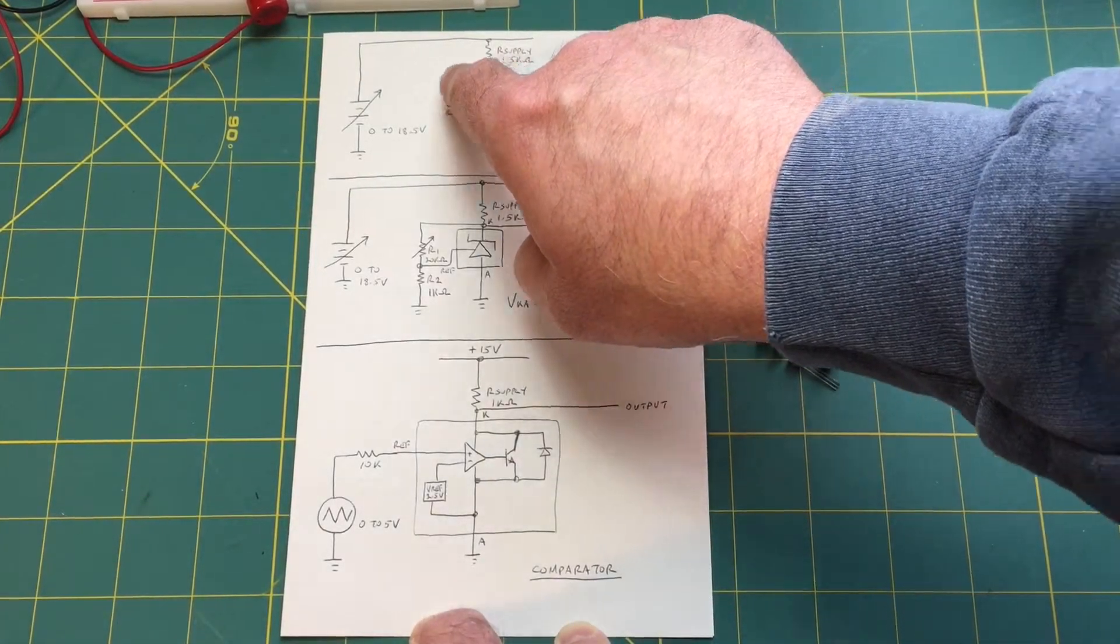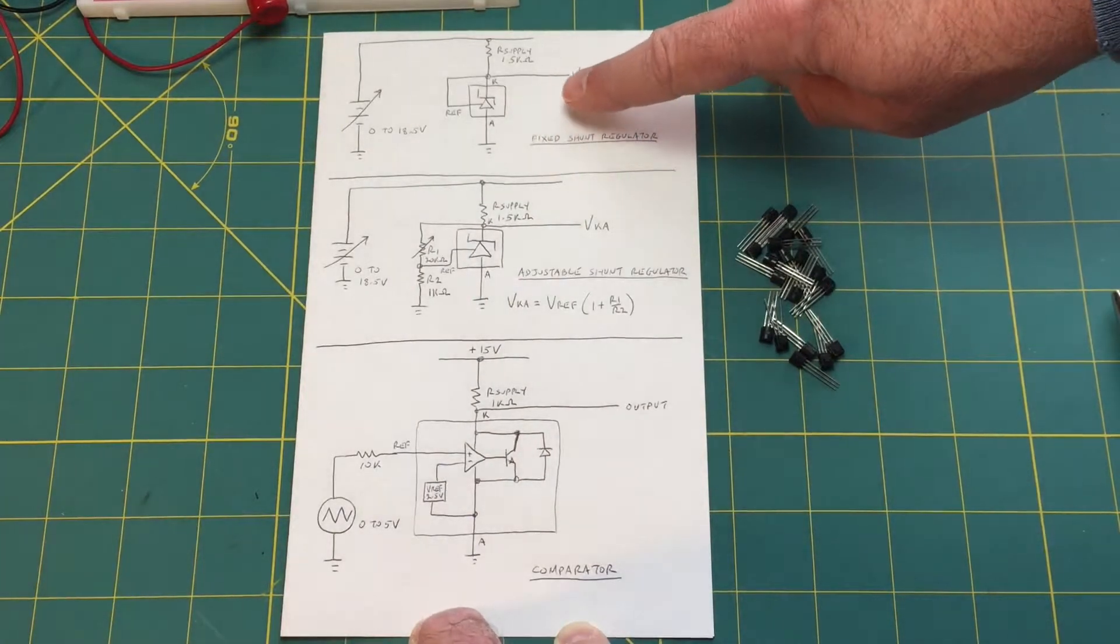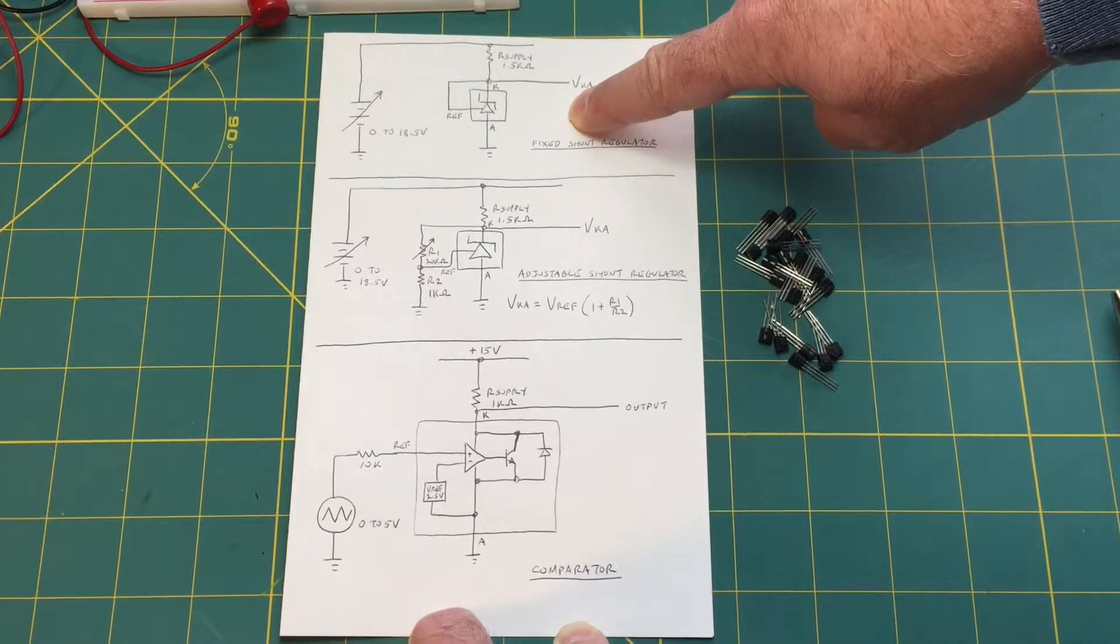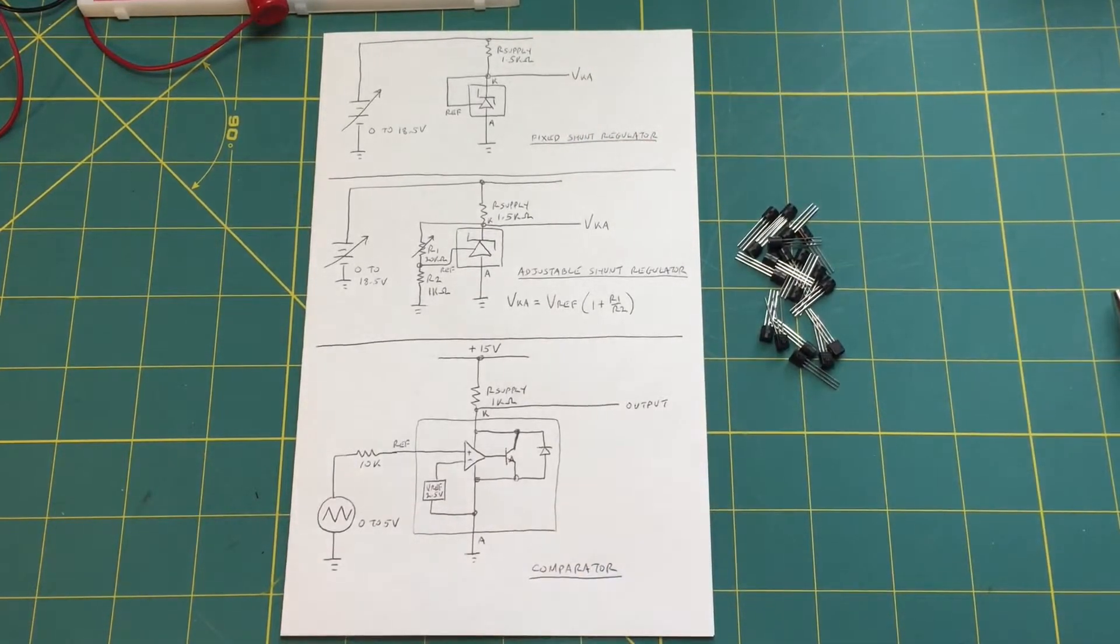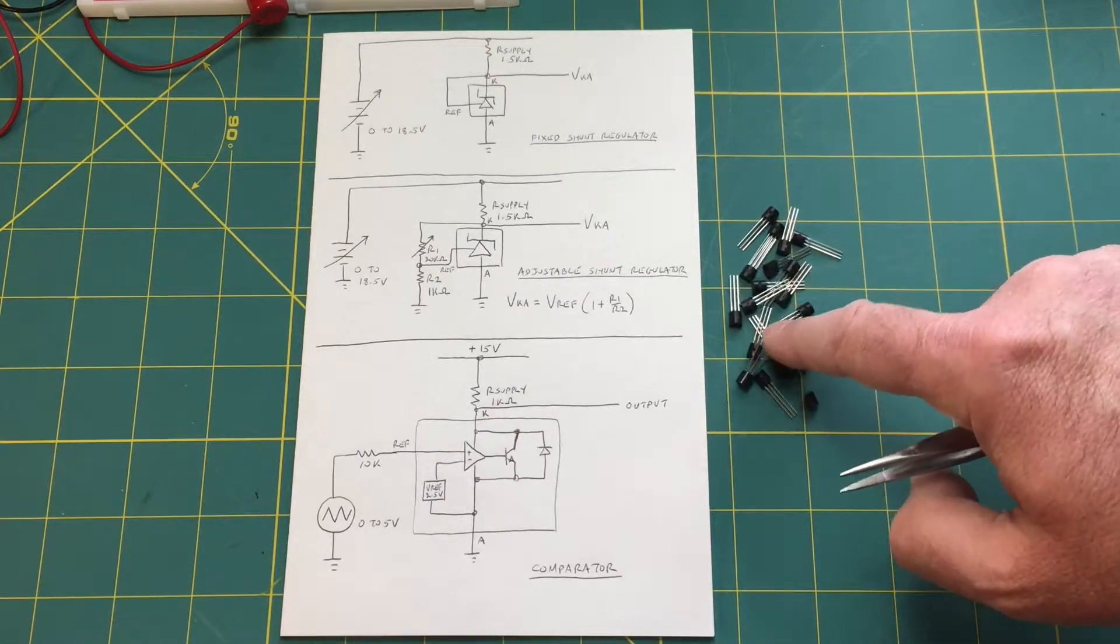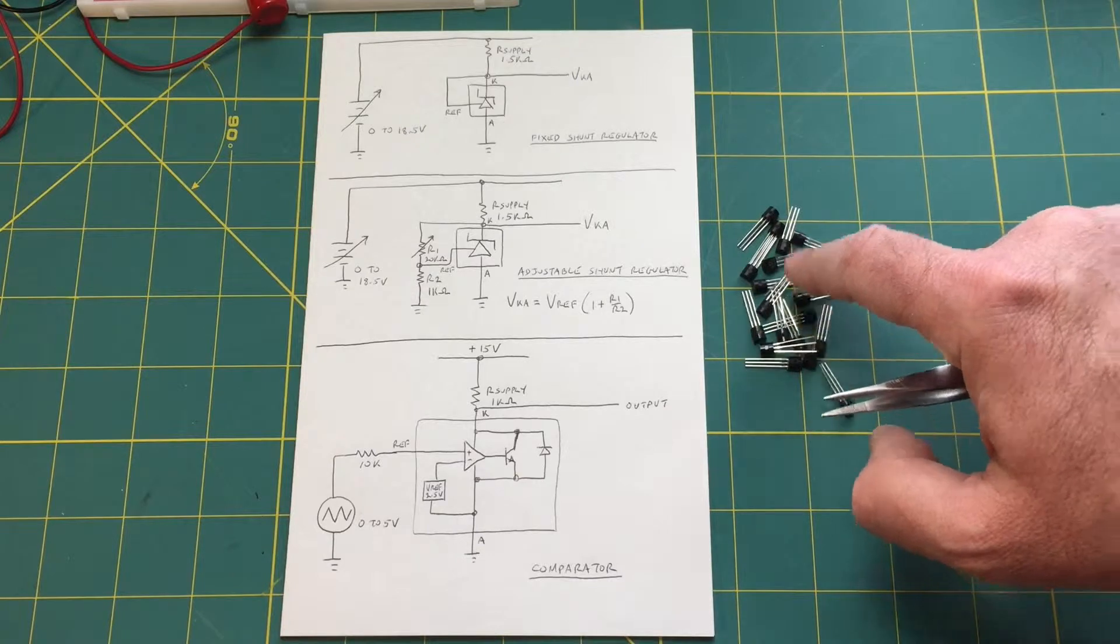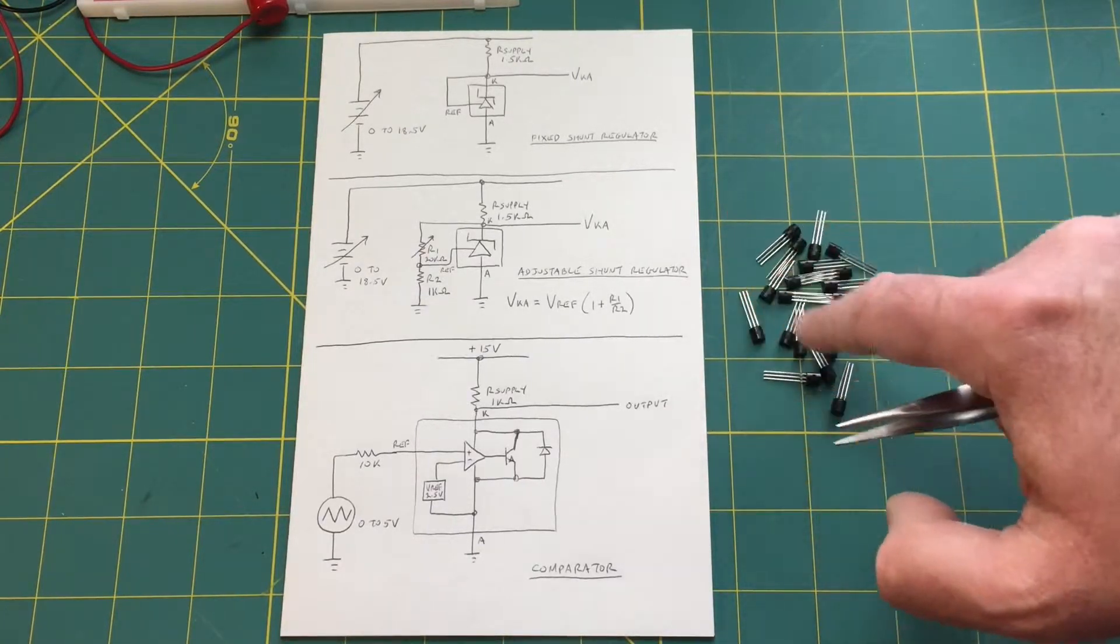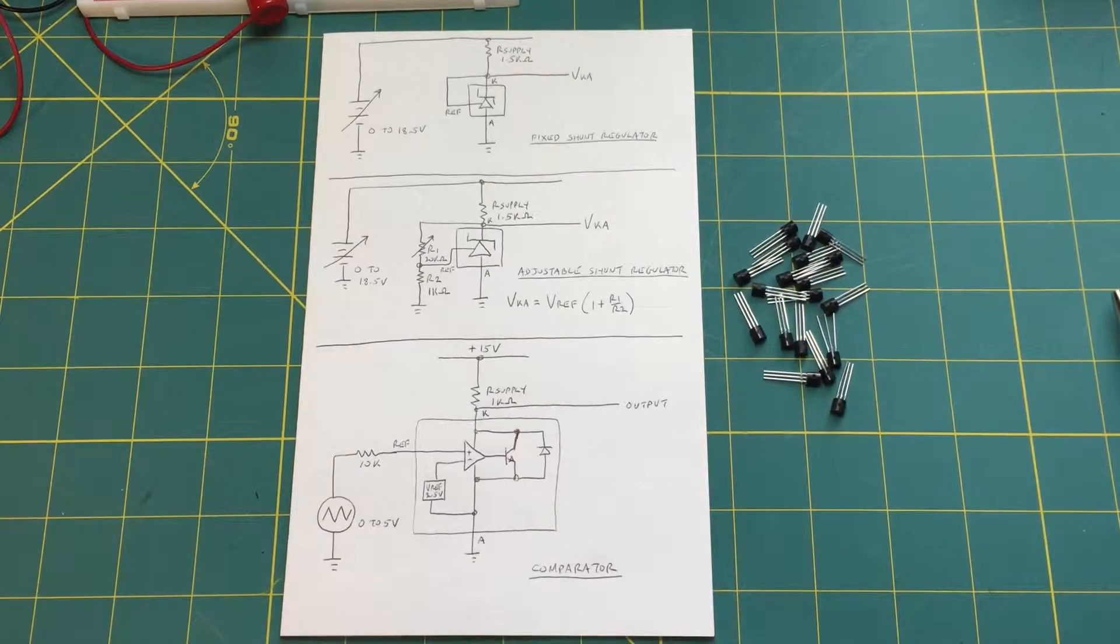We tie the output from the cathode back to the V ref pin so this should regulate at 2.5 volts which is the value of the internal voltage reference or fairly close to 2.5 volts. It's not exactly 2.5 as you'll see. It's a little bit off. I think it may still be within spec but I bought these parts from an eBay seller. They may be of dubious origin. They may not be to spec but they're close enough for our experiments today.